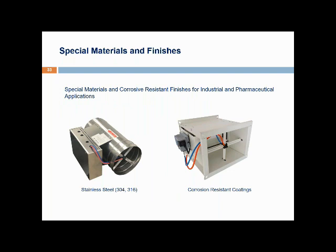Some projects, particularly for industrial or pharmaceutical applications, need anti-corrosive protection due to corrosive chemicals in the air. Stainless steel is used extensively where a high degree of corrosion resistance is required — grade 304 or 316. Other alternatives include epoxy-coated powder paint or other special coatings.